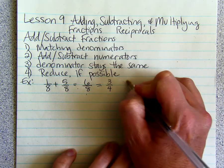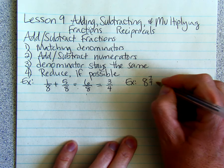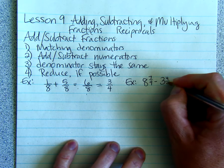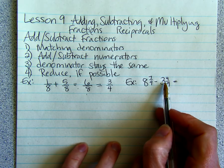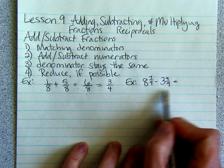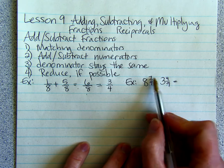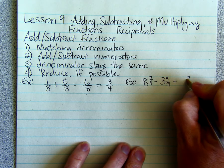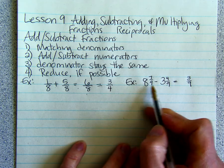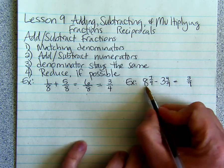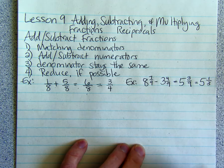Here's another example. 8 and 7 ninths minus 3 and 4 ninths. So when we have mixed numbers, we're going to subtract the fractions first. They have matching denominators, step one. Then step two, we're going to subtract the numerators. 7 minus 4 is 3. The denominator stays the same. And then we're going to reduce after we do the 8 minus 3. So 5 and 3 ninths is the same thing as 5 and 1 third.